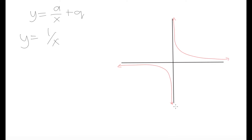Here we have our y-axis and here we have our x-axis. These two curves are meant to be symmetrical — what we have in the first quadrant is meant to be exactly the same as what we have in the third quadrant. Another important thing to notice is that these curves go onwards in both directions. As we go further up the y-axis or across the x-axis, the curves go closer and closer to the x and y axes, but they never actually touch them.